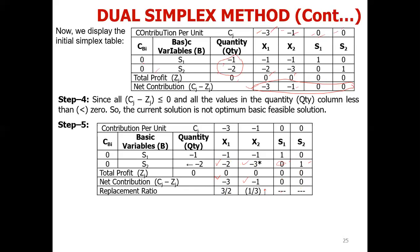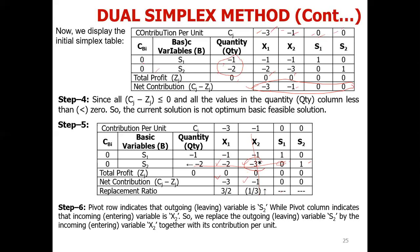The replacement ratio formula is: CJ value divided by pivot row element. The columns with zero or positive pivot row elements are skipped. Now we decide the entering variable based on the minimum ratio. The minimum ratio indicates which variable would enter, and in this case X2 will be entered. The intersecting element of the pivot row and pivot column is the key element.